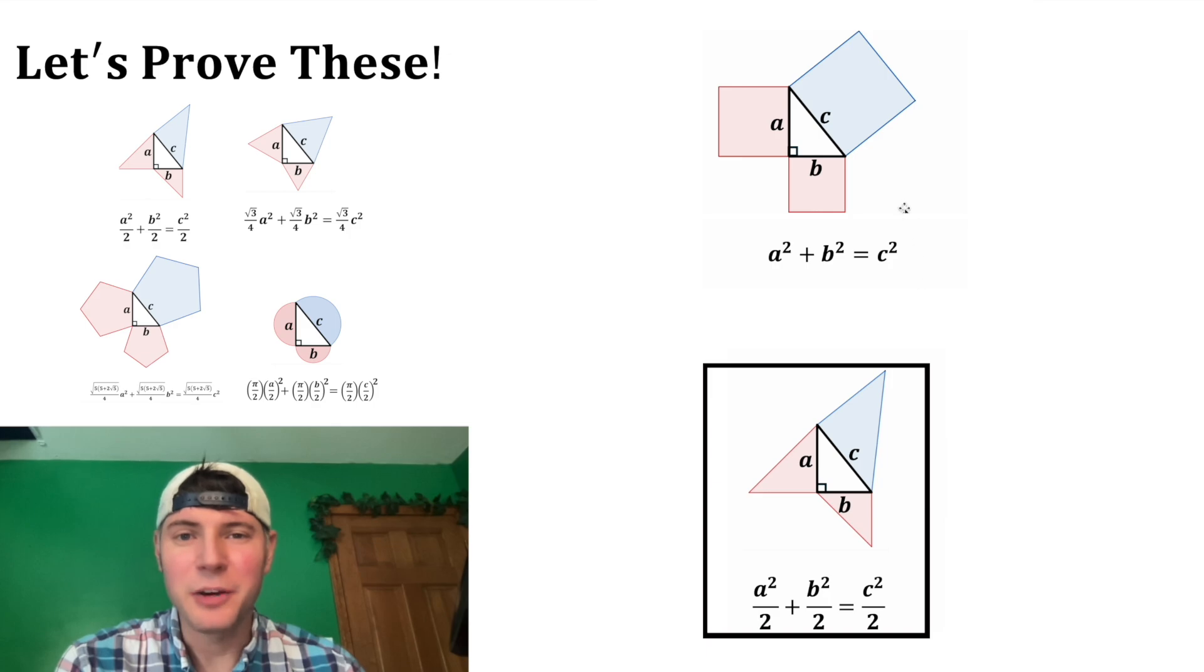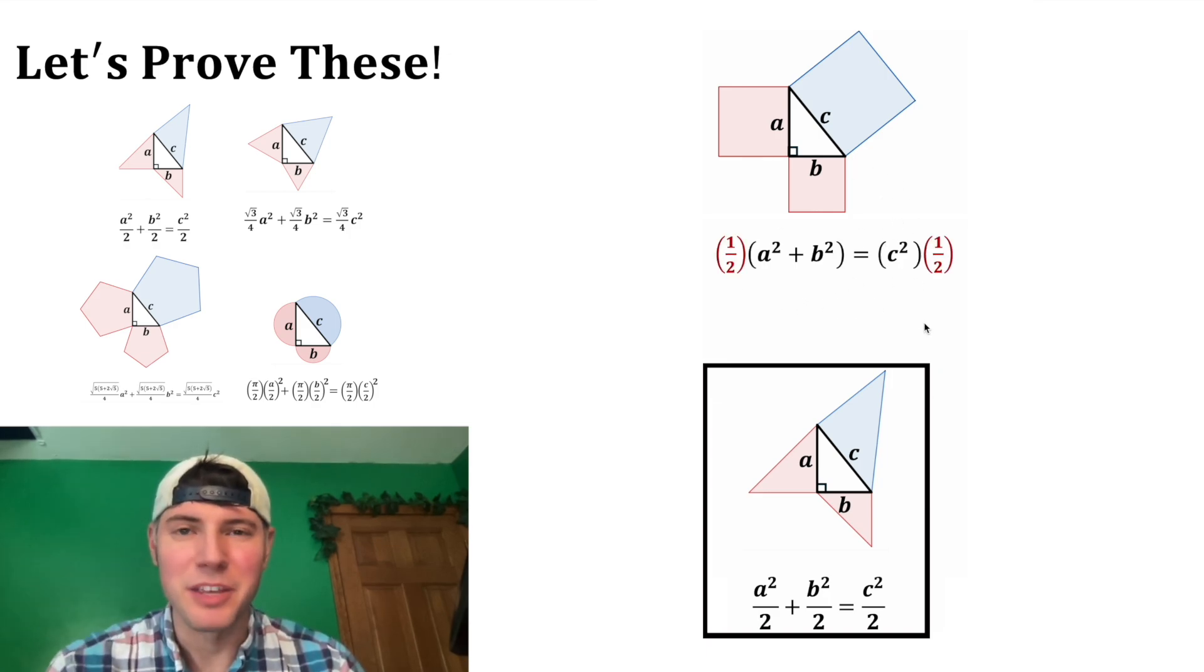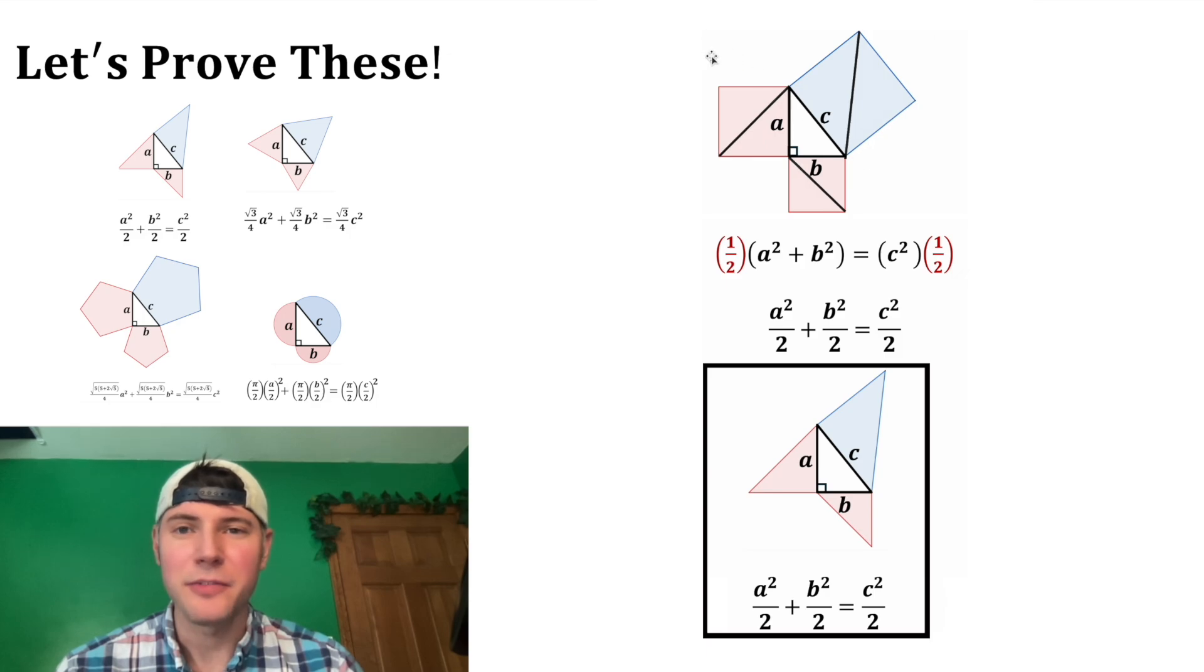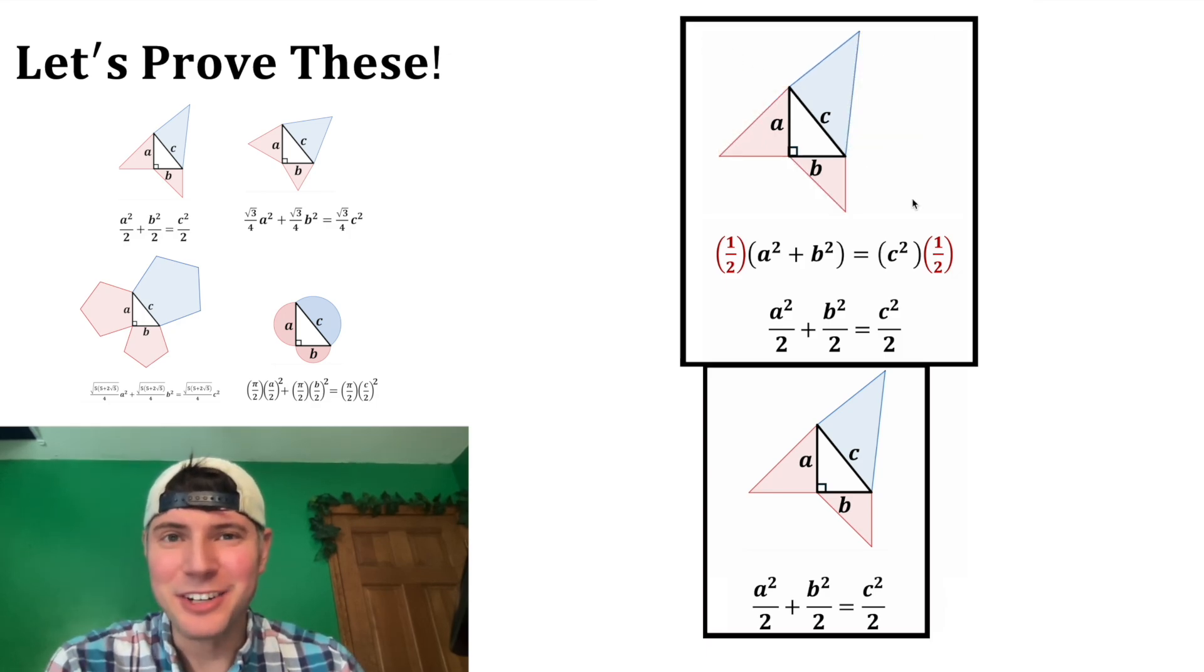So let's do this one, how do we get from here to here? Since this is an equation, we can multiply both sides by the same thing, in this case 1 half. And this 1 half will distribute to both of these terms, and this 1 half will distribute here. Now we end up with a squared over 2 plus b squared over 2 equals c squared over 2. And basically that's cutting all of these in half, so it ends up looking like this. And that's how to do the first one.